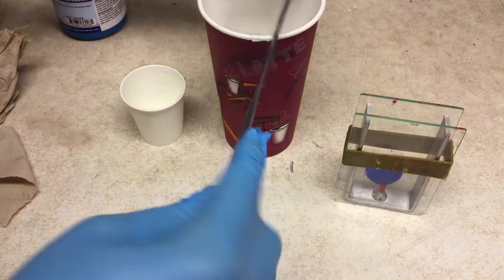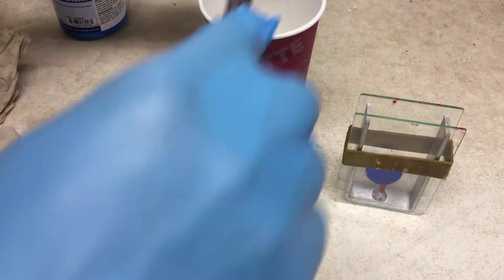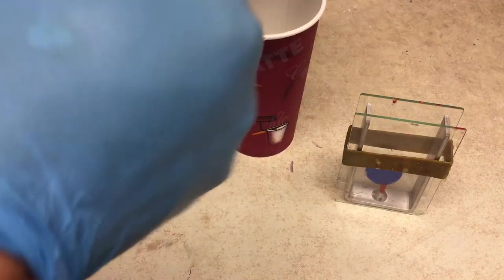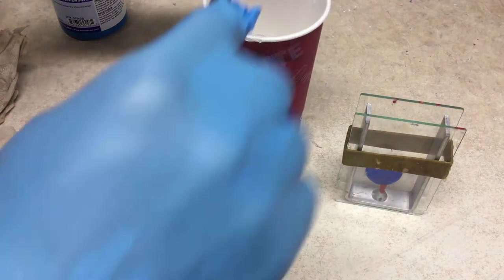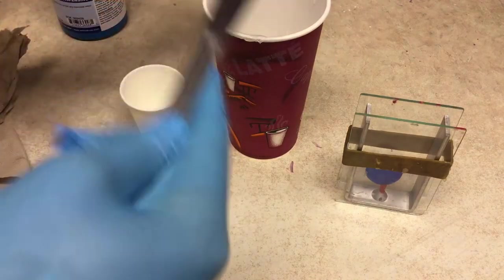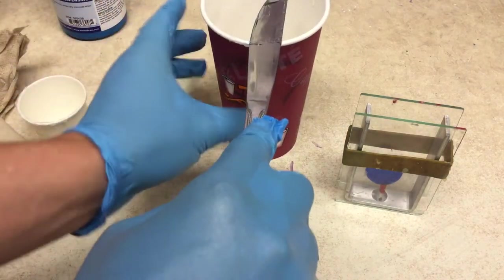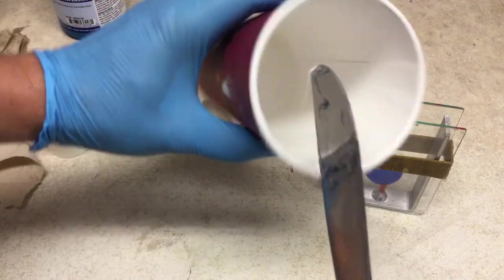At this point, once we've introduced part A and part B together in the same vessel, the clock is ticking based on the specifications of the Sorta Clear polymer. We've got everything in our cup that we can see.